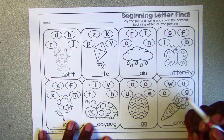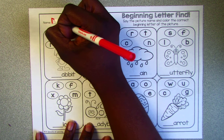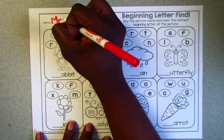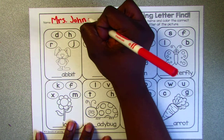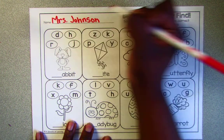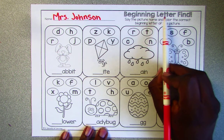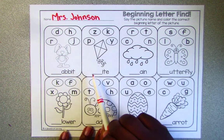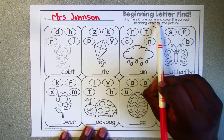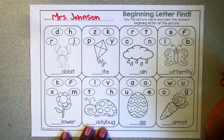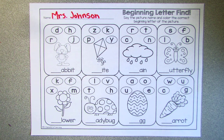Okay, so first we need to begin by putting our name at the top of our paper. So for this worksheet, we're looking for the beginning letter to complete each word. We're gonna say the picture name and then we're gonna color the correct letter that it begins with. So we're gonna go over the pictures.